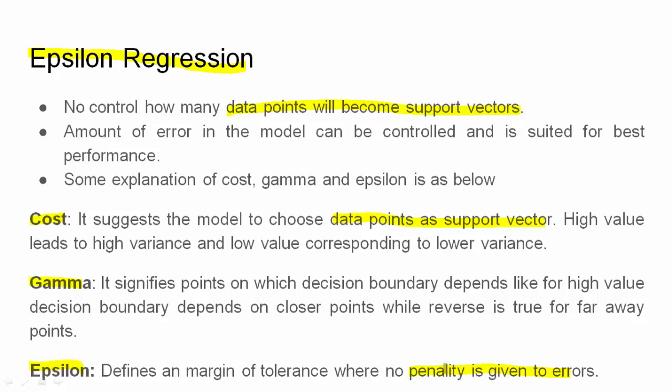If the value of cost is high, it means a smaller number of support vectors and leads to high variance. But if the value of cost is low, it leads to low variance. High variance may lead to overfitting, whereas low variance will lead to underfitting. So we have to choose the value of cost, gamma, and epsilon in such a way that our model gets optimized.